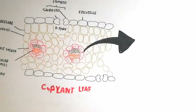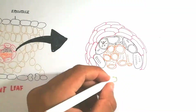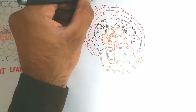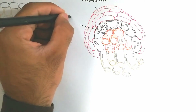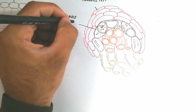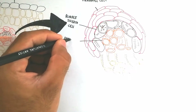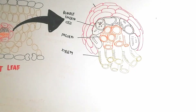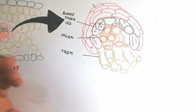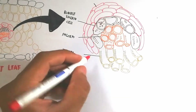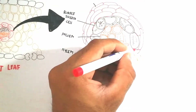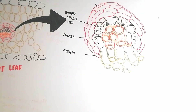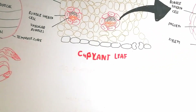The chloroplasts are present in the bundle sheath cells. Here I draw a mesophyll cell surrounded by the bundle sheath cell, which contains chloroplasts. The xylem and phloem vessels are present — companion cells and sieve elements are used for the phloem, while fibers and tracheids are used for the xylem. Xylem conducts water and minerals; phloem conducts food.